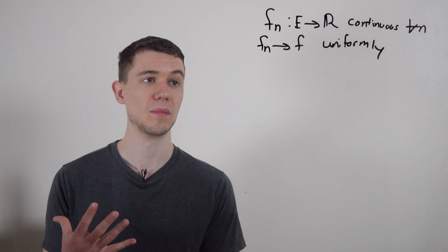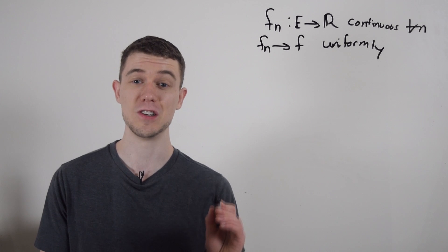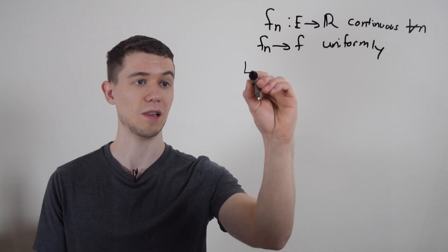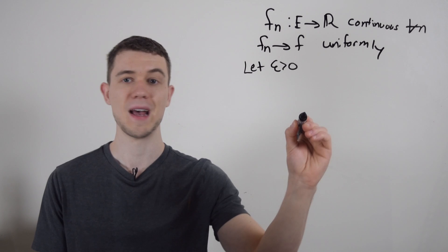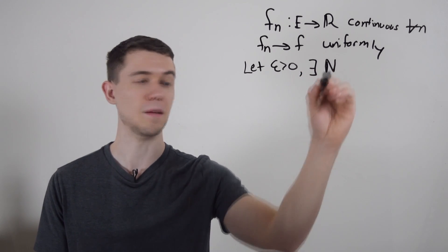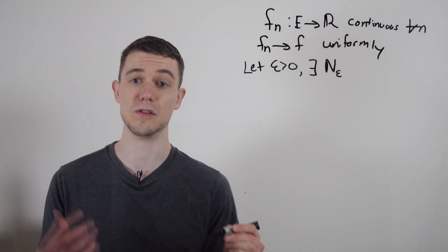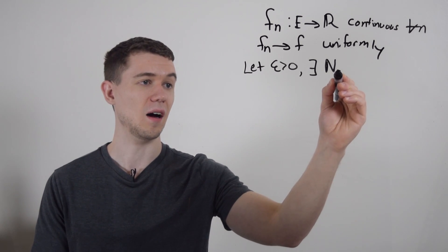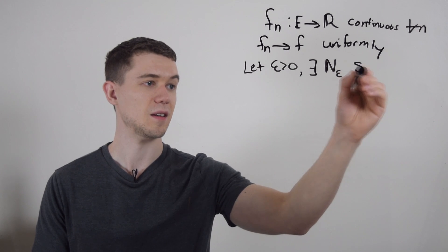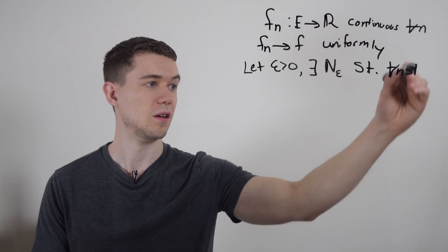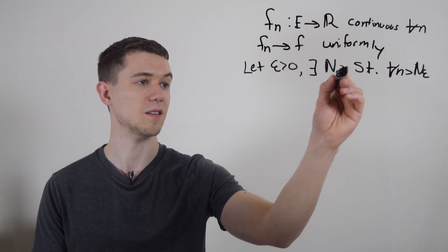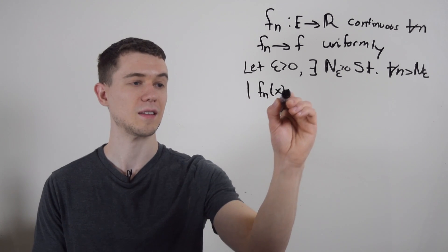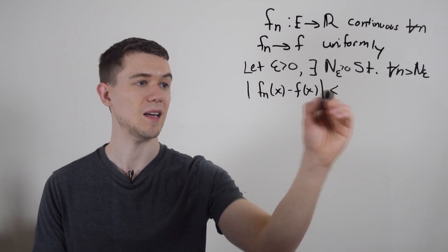So what does it mean for a function or a sequence of functions to converge uniformly? Well, that means for all epsilon greater than zero, so I'll let epsilon be greater than zero, that would mean there exists some n, some integer n, which depends on epsilon, so you can either say n of epsilon or n sub epsilon, and that would mean that there exists an n sub epsilon such that for all little n greater than n sub epsilon, and I guess I should specify that this is bigger than zero, that the absolute value of f sub n of x minus f of x is less than epsilon